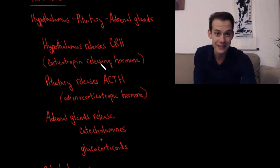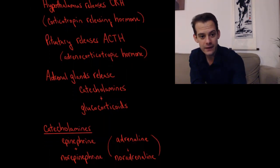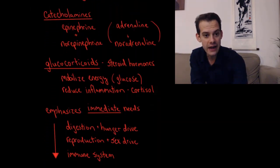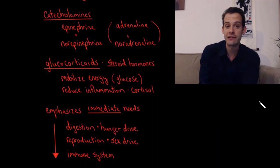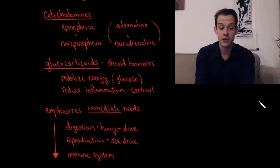So what are catecholamines and glucocorticoids? So the main catecholamines that are released are epinephrine and norepinephrine, but you probably know them better by their British names, adrenaline and noradrenaline, and it's much easier to remember that adrenaline and noradrenaline are released by the adrenal glands.